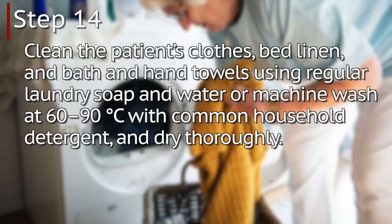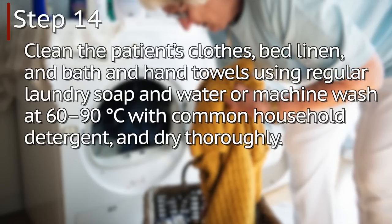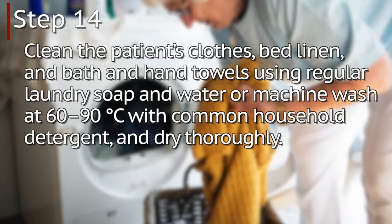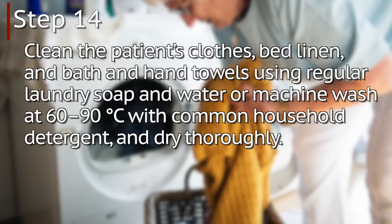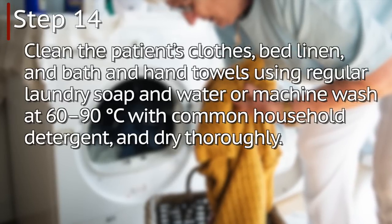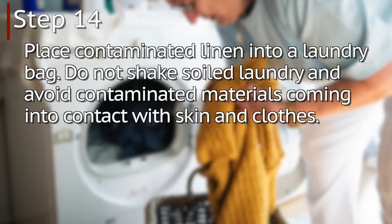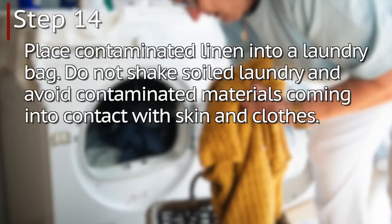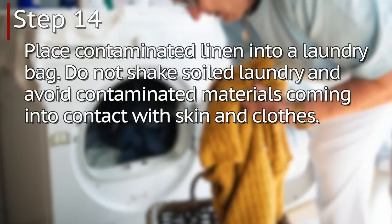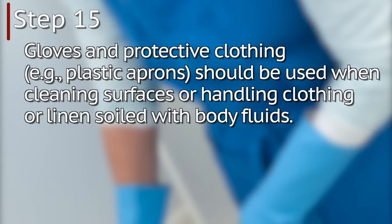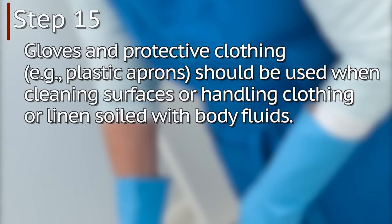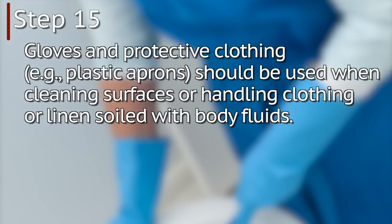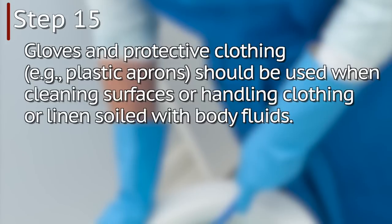Step fourteen: clean the patient's clothes, bed linen, and bath and hand towels using regular laundry soap and water, or machine wash them on the hot water setting with common household detergent, then dry them thoroughly. Place contaminated linen into a laundry bag. Do not shake soiled laundry and avoid contaminated materials coming into contact with your skin and clothes. Step fifteen: gloves and protective clothing — for instance, a plastic apron — should be used when cleaning surfaces or handling clothing or linen soiled with body fluids.